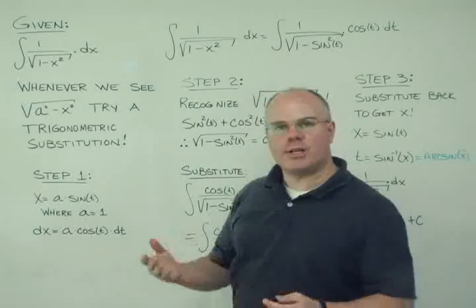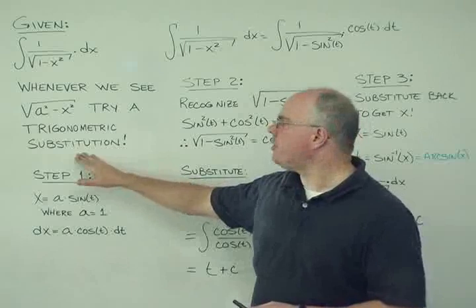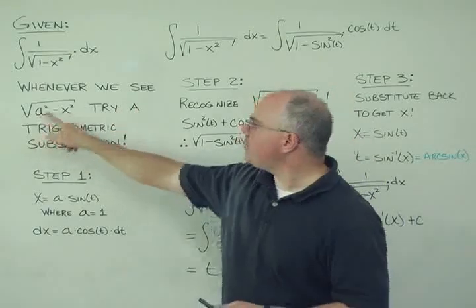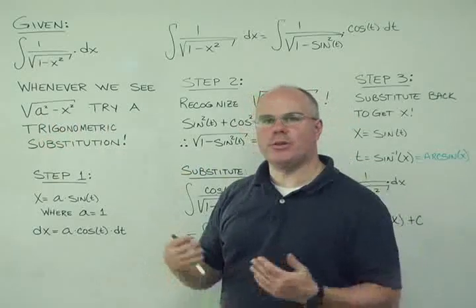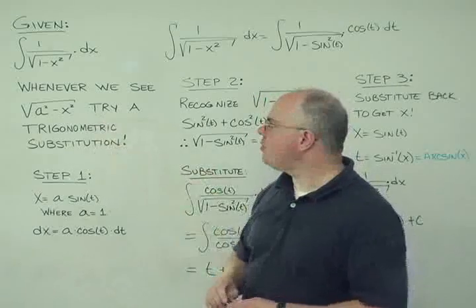but we've got a recommendation here, and that is we're going to do a trigonometric substitution. So whenever we see something like the square root of a squared minus x squared, where a is a constant, could be 5, could be 1, could be pi, we're going to try this trigonometric substitution.